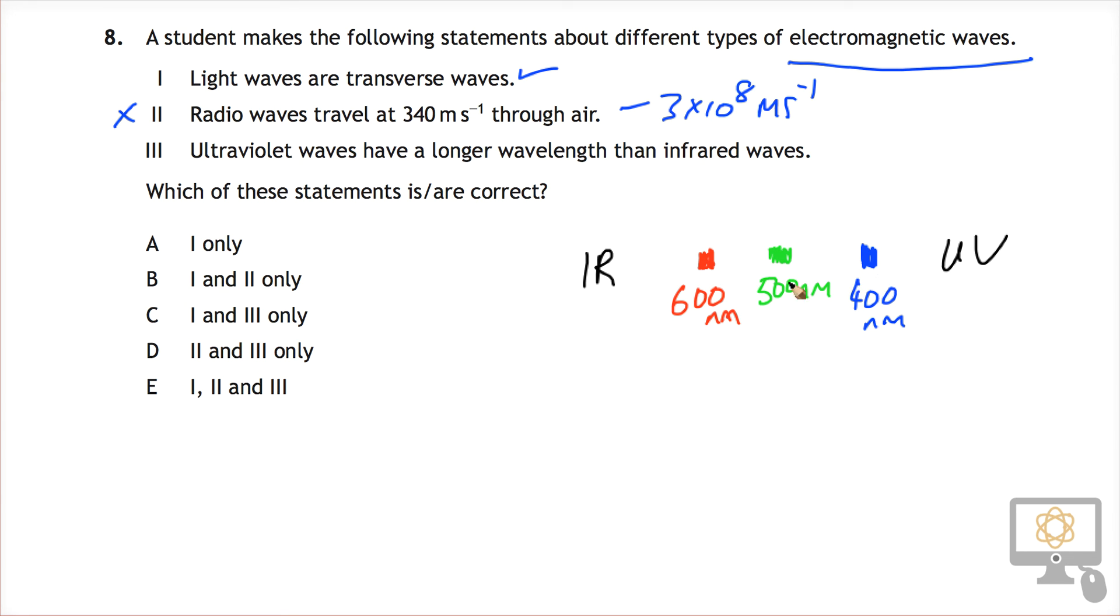And so what does that say? Well, that means that ultraviolet is going to have a really short wavelength and infrared will be a much longer wavelength. So the statement says ultraviolet waves have a longer wavelength. Well, that's simply not correct. So this one's wrong as well.